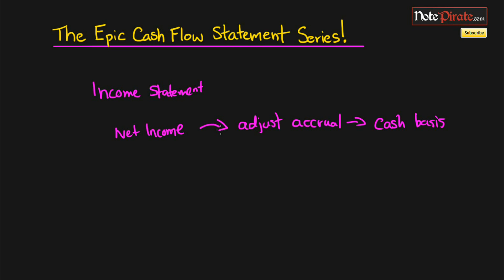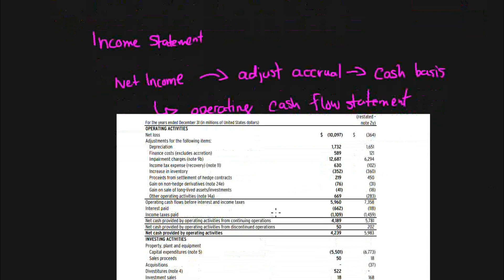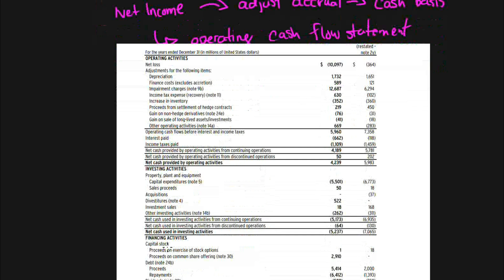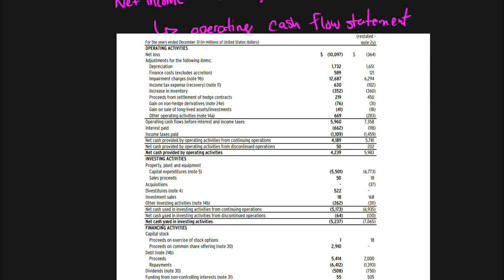That way we'll be able to realize how much cash has changed for the year, and this is going to be entirely the operating section of our cash flow statement. Going back to the statement, you can see the operating part right here — it's a complete segment. There are actually three parts to the cash flow statement: operating, investing, and financing activities, because all activities within a company can be separated into these three types.